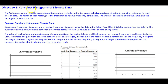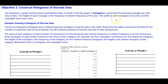Objective 2: Construct histograms of discrete data. The histogram is a graph used to present quantitative data, and is similar to the bar graph. A histogram is constructed by drawing rectangles for each class of data. The height of each rectangle is the frequency or relative frequency of the class. The width of each rectangle is the same, and the rectangles touch each other.